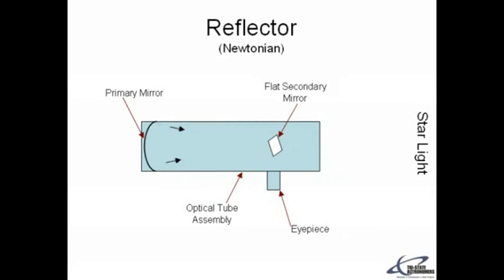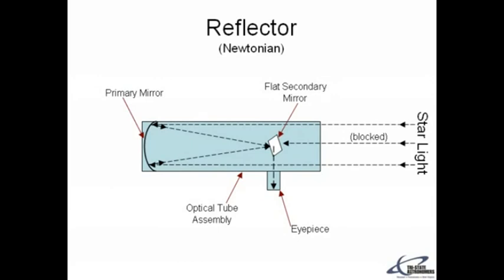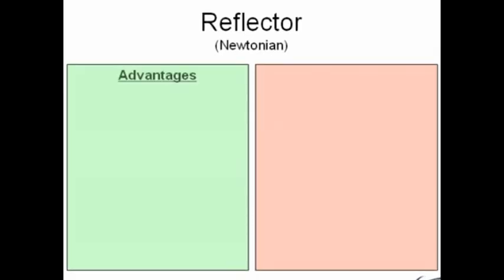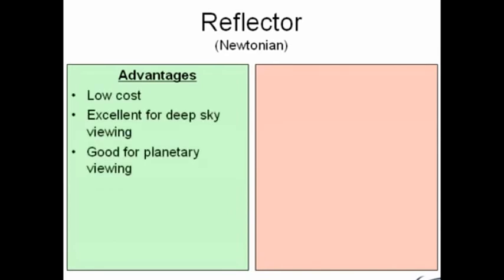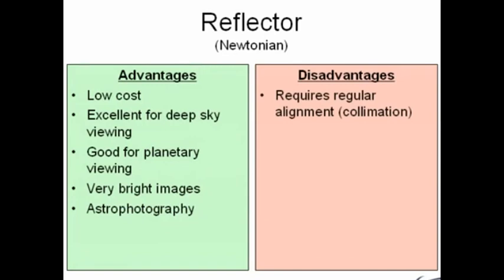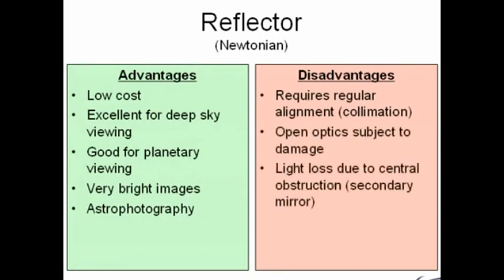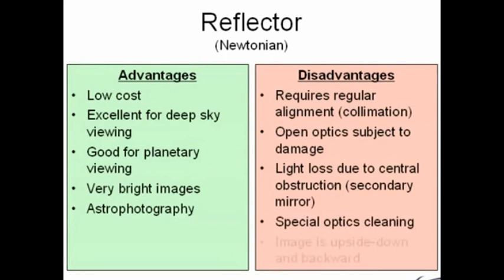The Newtonian reflector filters starlight into a primary mirror in the back, which bounces back, hits a flat secondary mirror, and goes down into the eyepiece. Some advantages of the Newtonian reflector are its low cost, it is very good for planetary viewing, and it has very bright images. A few disadvantages are the fact that it requires regular alignment and the image is portrayed upside down and backwards.